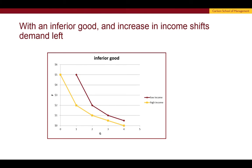With an inferior good, an increase in income shifts demand to the left. This diagram looks similar, except notice that the low income demand curve — the maroon one — is to the right of the higher income demand curve, the gold one. So with an inferior good, an increase in income shifts the individual's demand curve to the left.